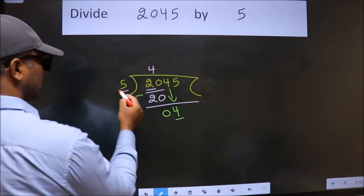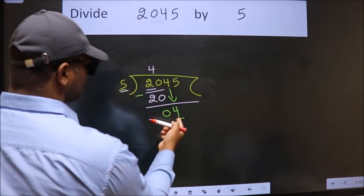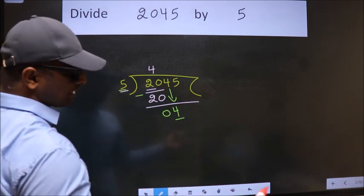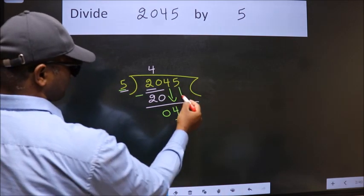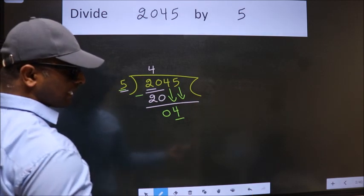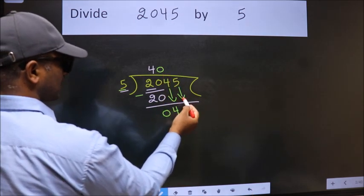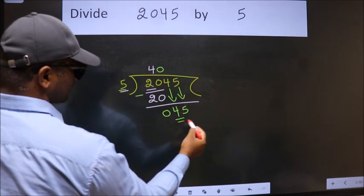Now here we have 4, here 5. 4 is smaller than 5, so we should bring down the second number. And the rule to bring down the second number is put 0 here. Then only we can bring down this number. So 45.